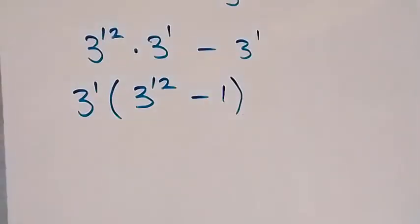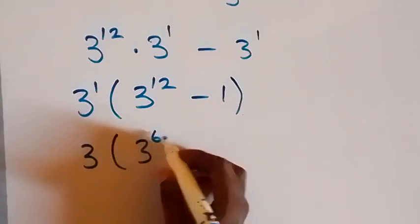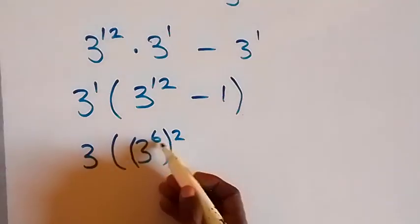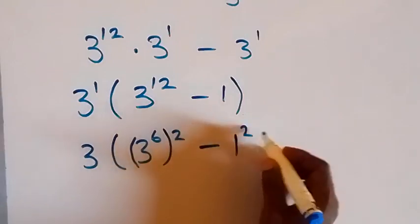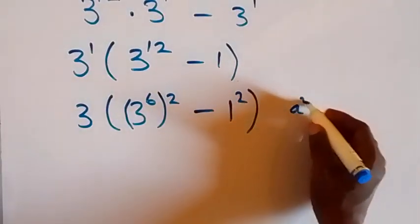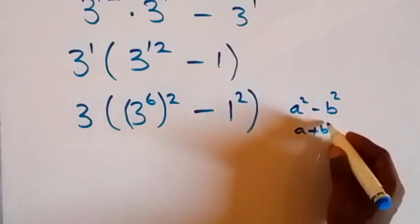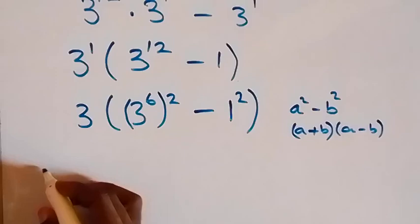So we have 3 raised to power 1 into bracket: 3 raised to power 12 minus 1. From here we can also write 3 raised to power 12 as 3 raised to power 6 times 2, that is 3 raised to power 6 squared, then minus 1 squared. This follows from the difference of two squares: a squared minus b squared equals a plus b times a minus b, and we can apply that here.